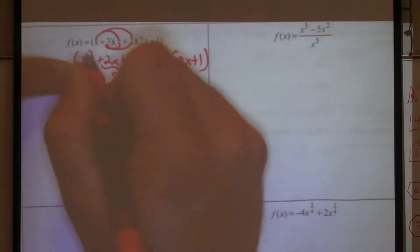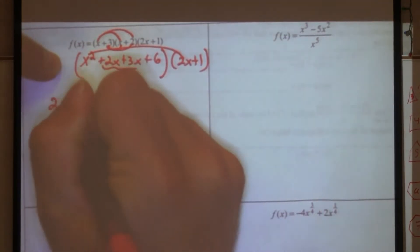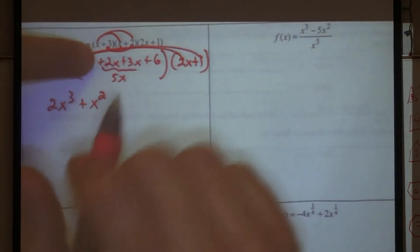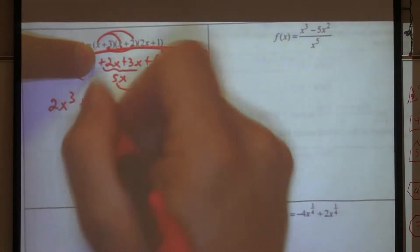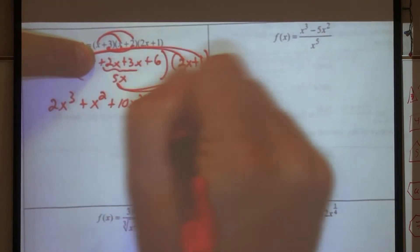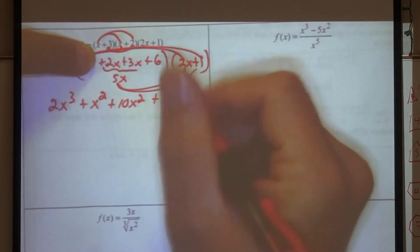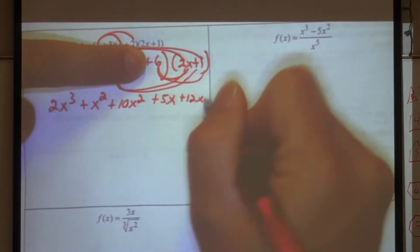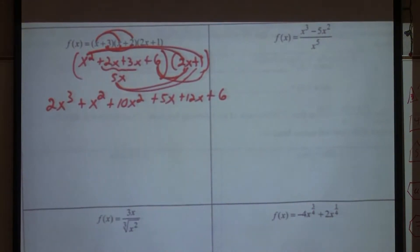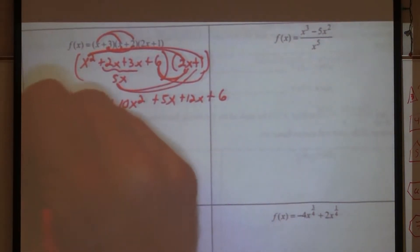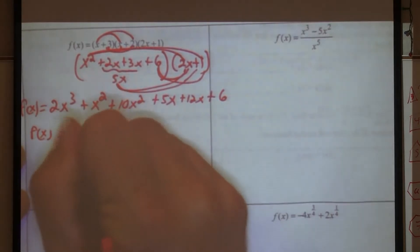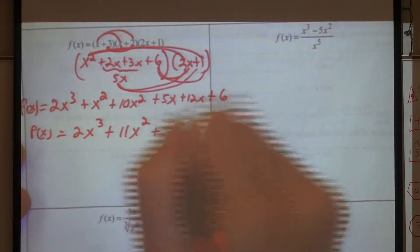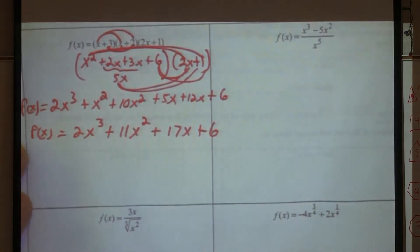Let's do it. X squared times two x? Two x to the third. X squared times one? X squared. So we're done with the x squared. Now let's do the five x, right? Five x times two x? Ten x squared. Five x times one? Five x. Now let's use the six. Six times two x? Twelve x. Six times one? Six. Okay, that's combined like terms. And what would we end up with? Two x to the third plus eleven x squared plus seventeen x plus six.